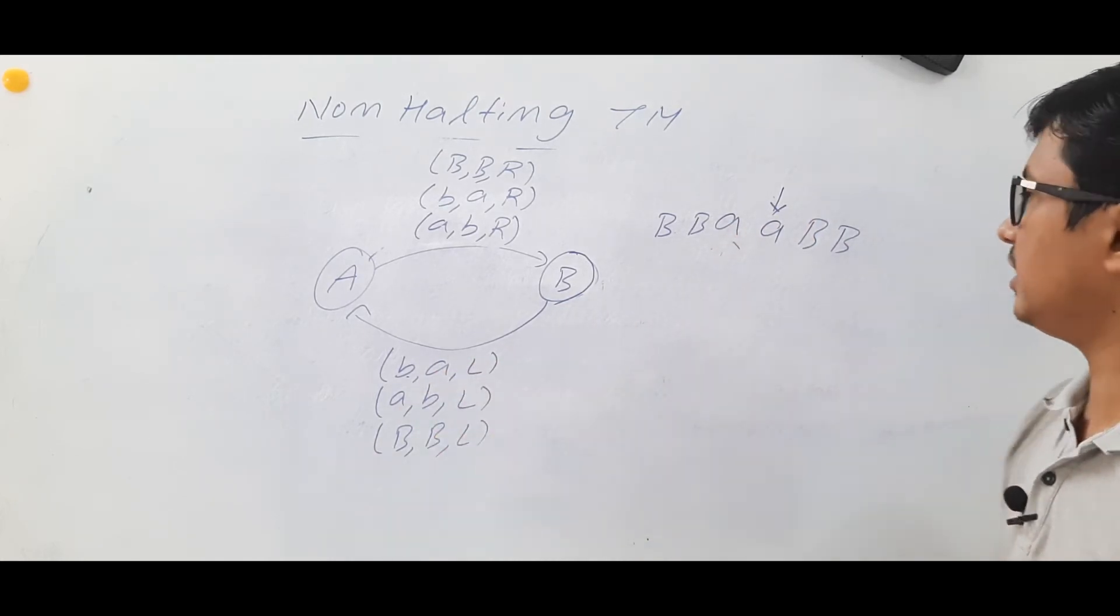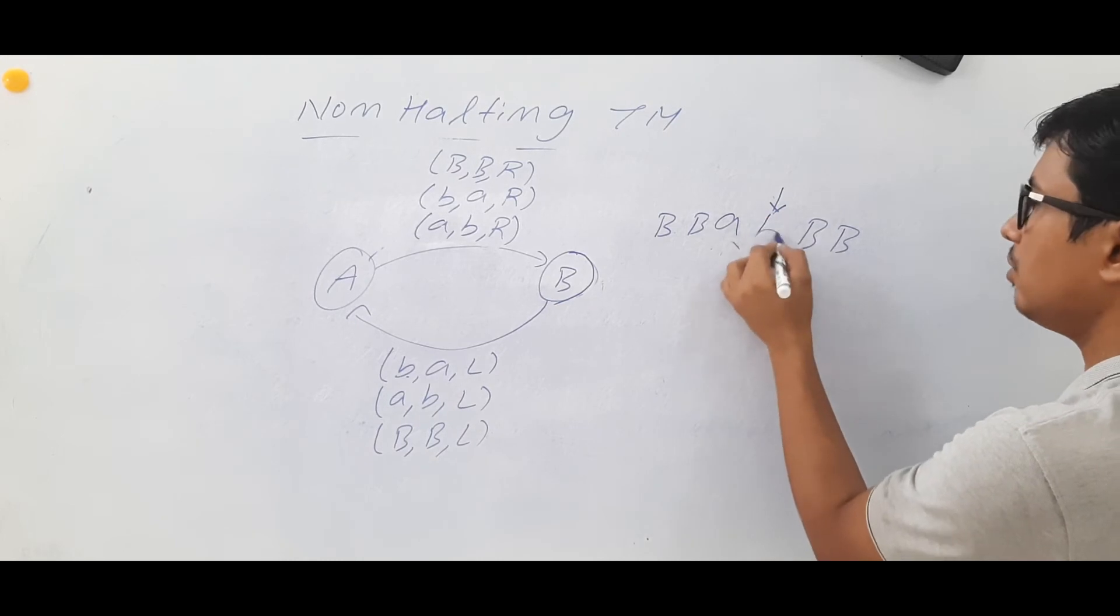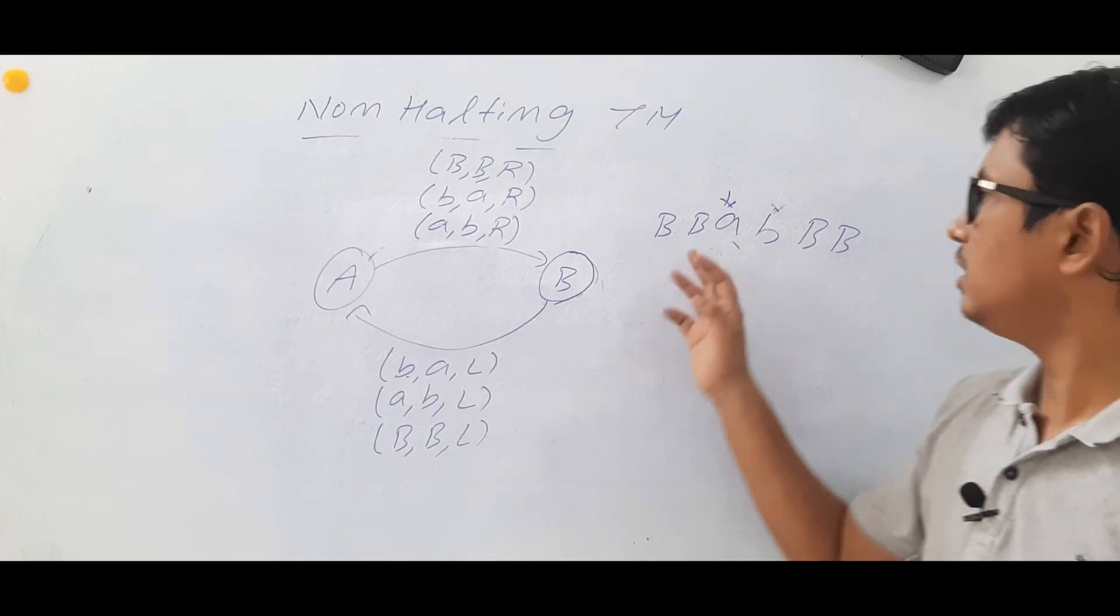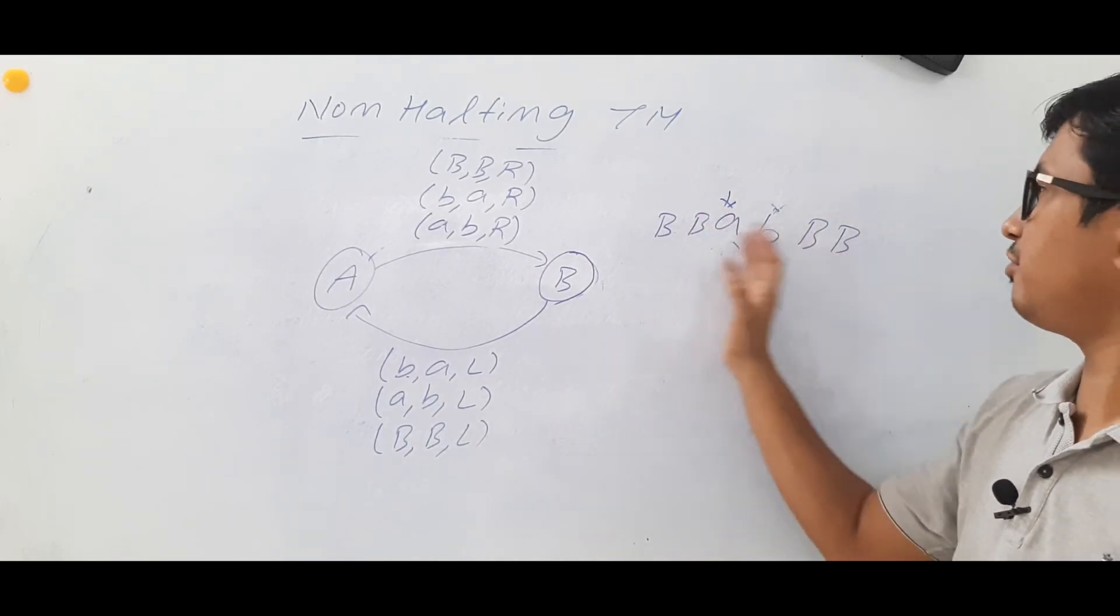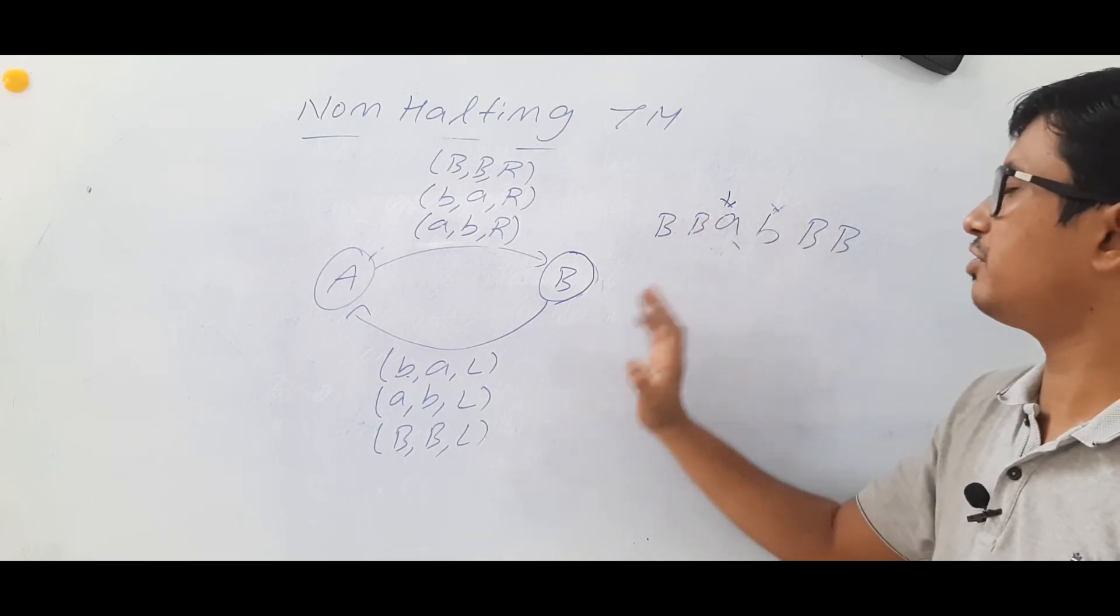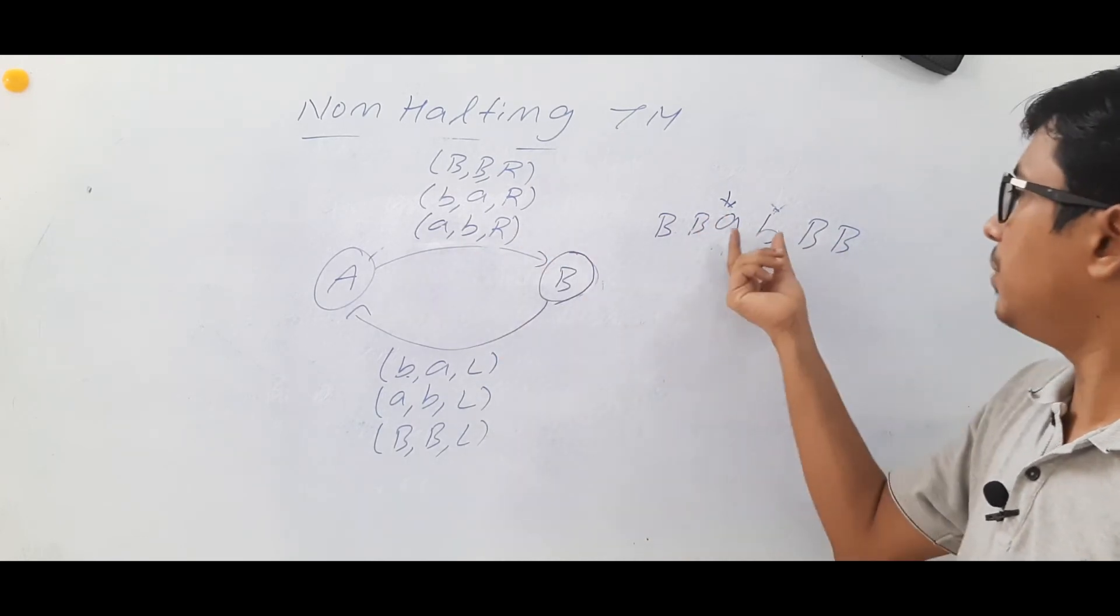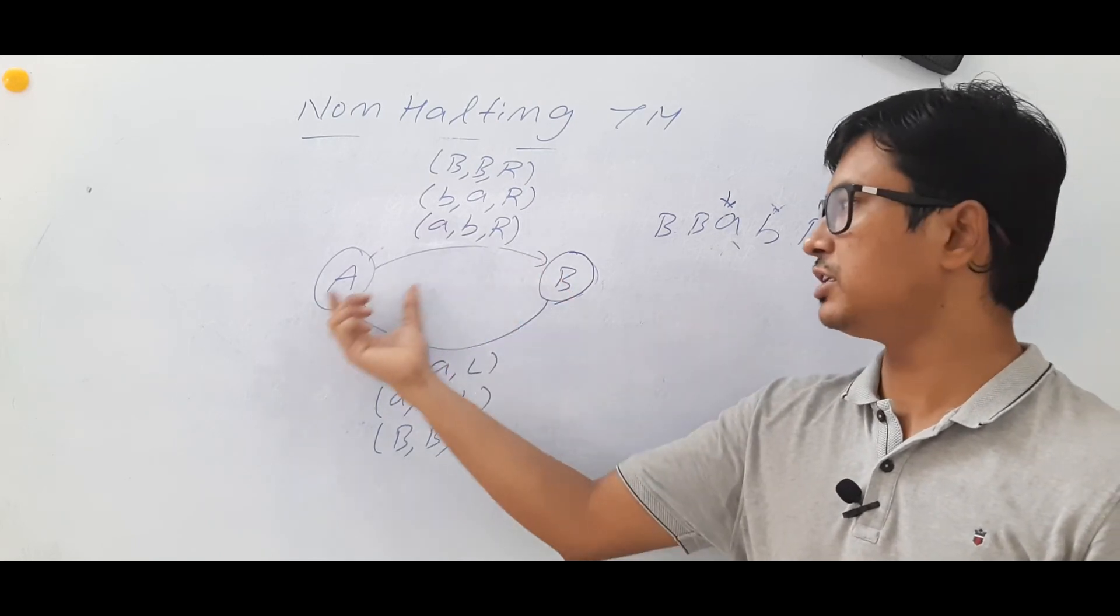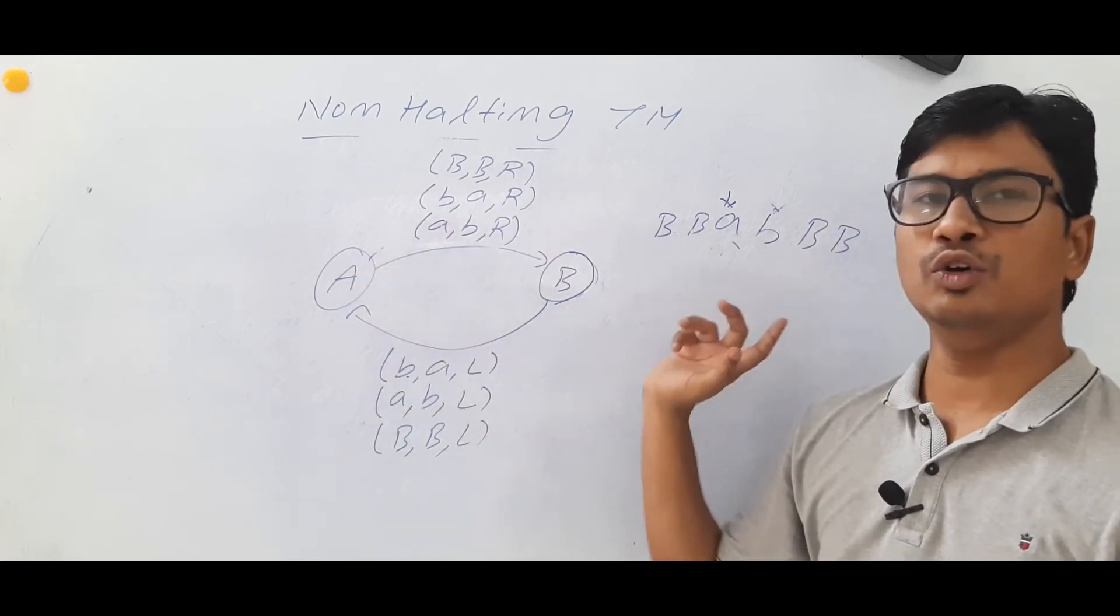If you find an A, modify it to B and move to the left. If you see these two states, it is just moving right, left—right to left, left to right. They are modifying, but we cannot come out from these two states. It is going into a loop.